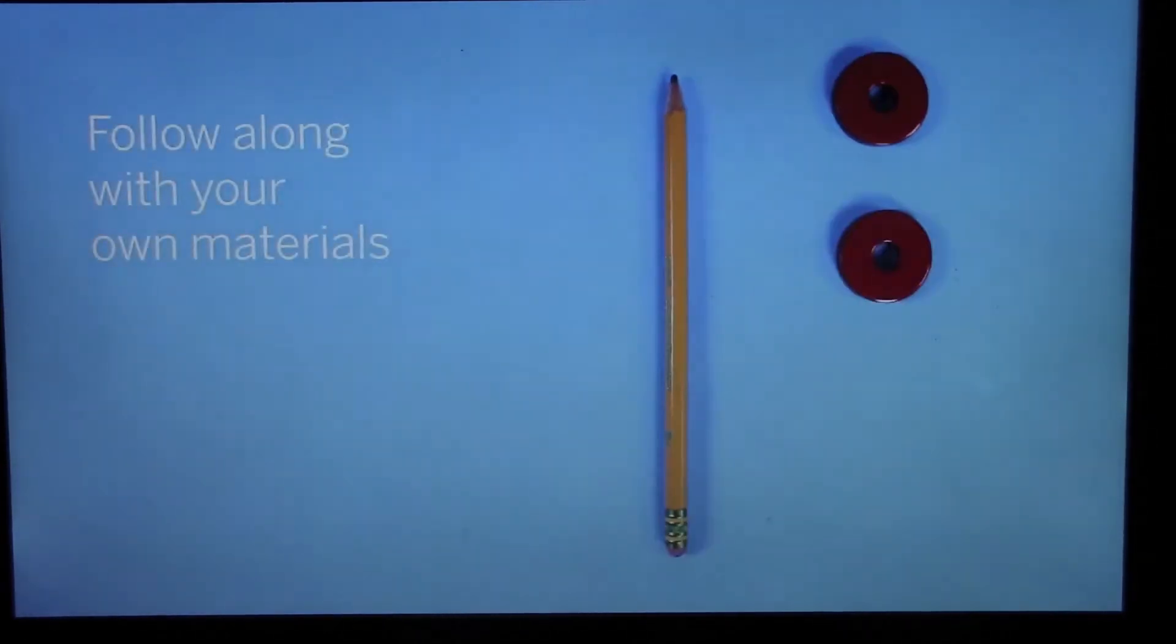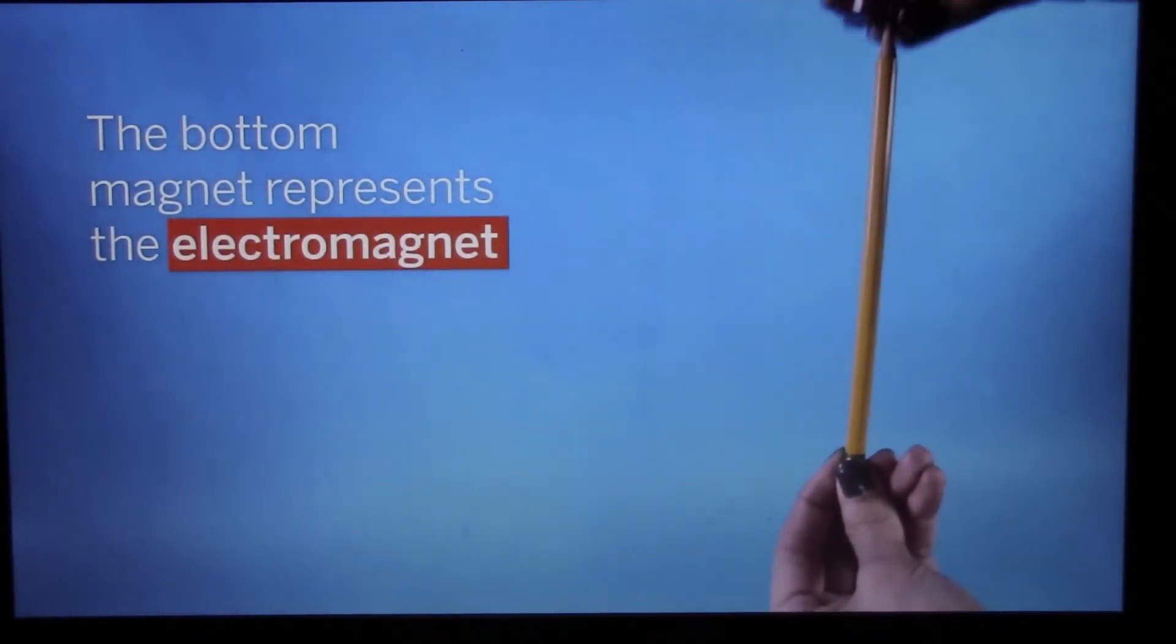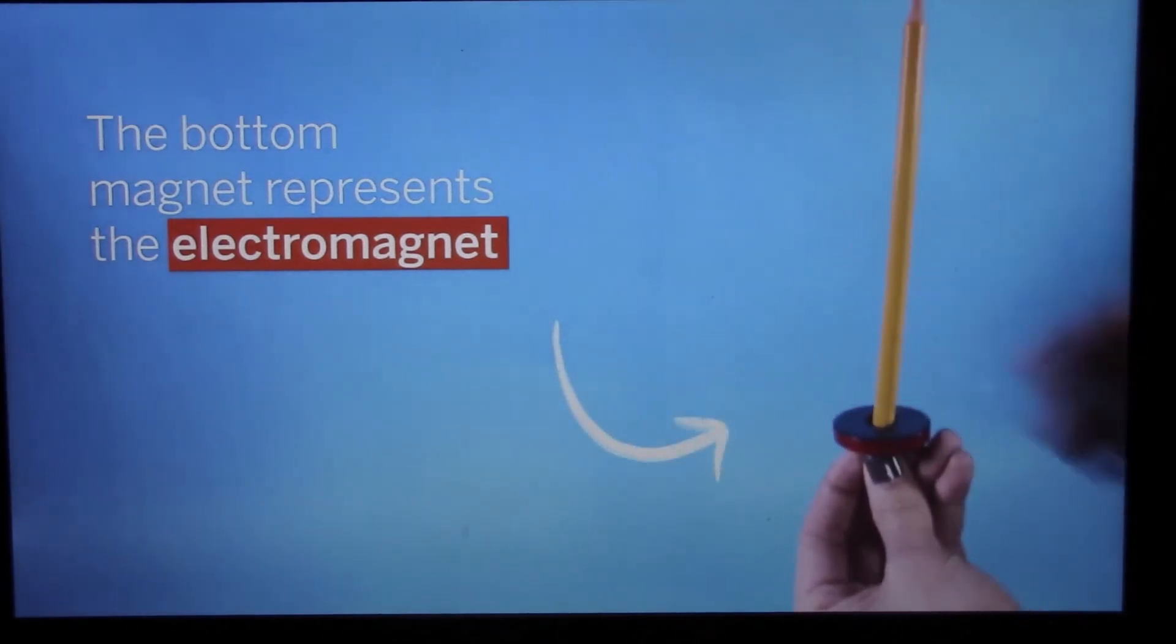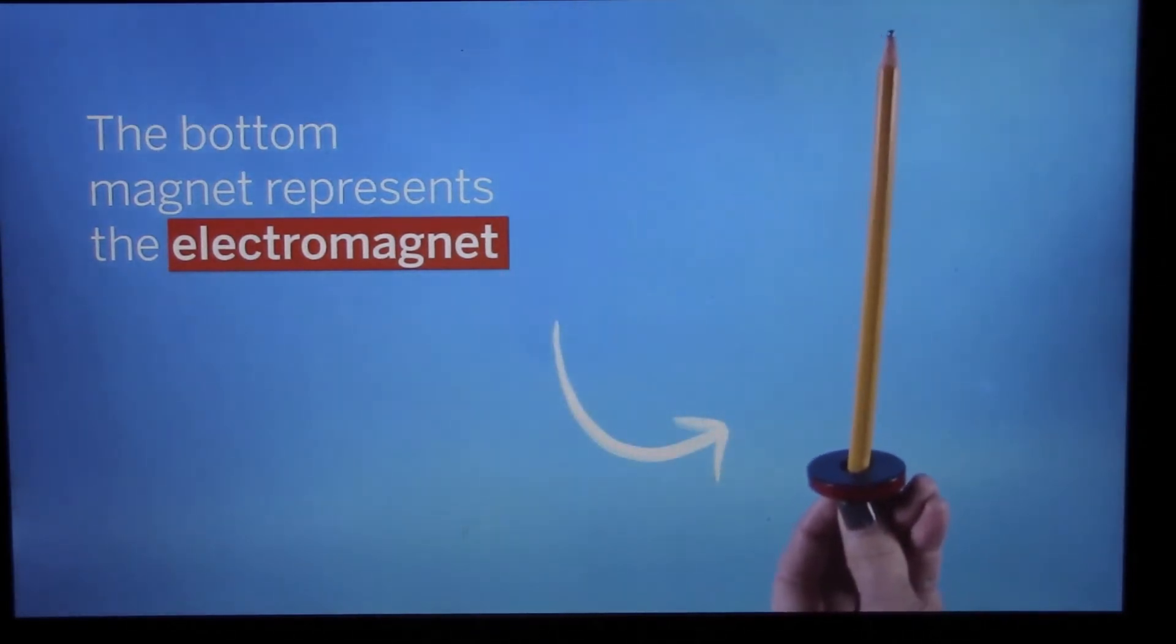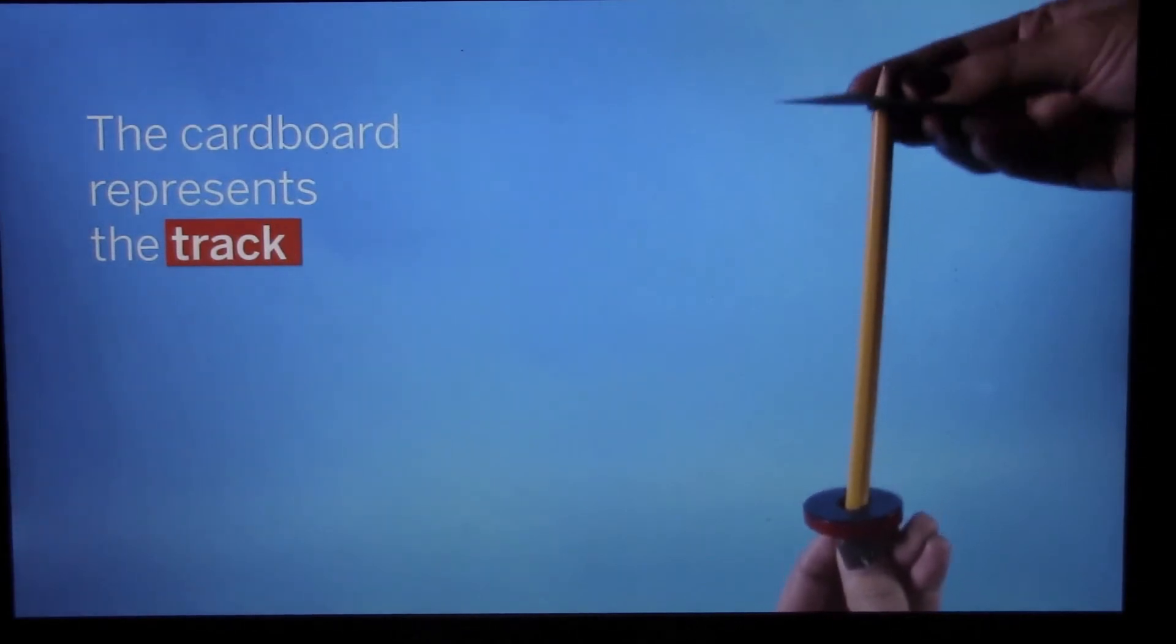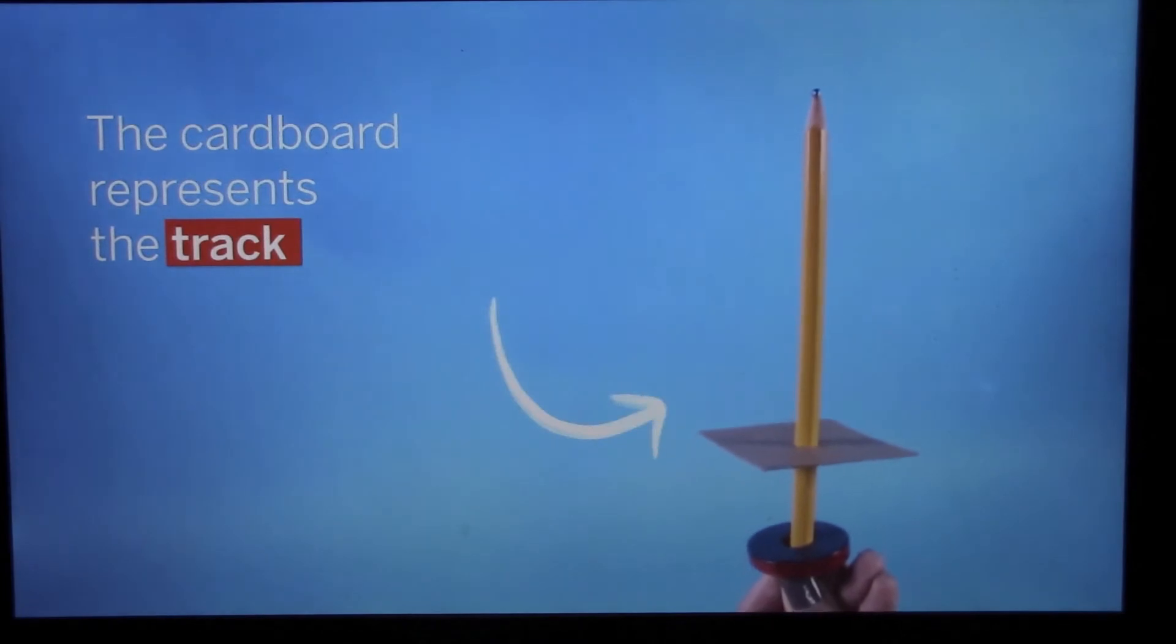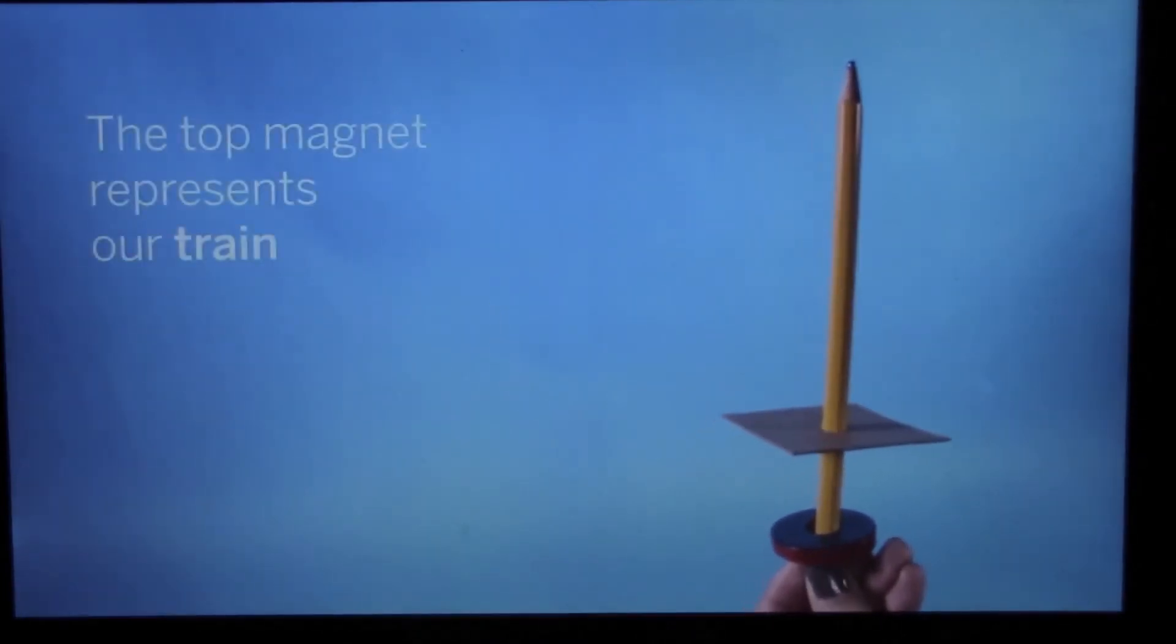Follow along with your own materials as we demonstrate one way to model the train. The bottom magnet represents the electromagnet in the track. The cardboard represents the track itself, and the top magnet represents our train.